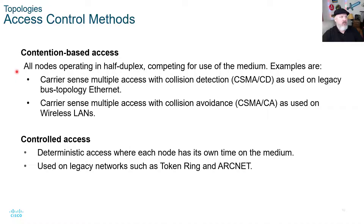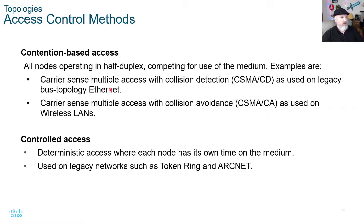Contention-based access: all nodes operating in half duplex compete for use of the medium. Examples include Carrier Sense Multiple Access with Collision Detection (CSMA/CD), used on legacy bus topology Ethernet, and Carrier Sense Multiple Access with Collision Avoidance (CSMA/CA), used on wireless LANs. You need to know the difference between these two — they will likely appear on an exam. Focus on understanding collision detection versus collision avoidance.